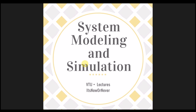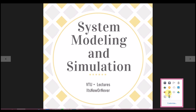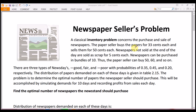Welcome to another class of system modeling and simulation. Today we're going to look at the newspaper seller problem, where we are trying to find the optimal number of newspapers the seller has to buy in order to make profit. This is a classic inventory problem concerning how much newspaper should I purchase or keep in stock so that I make a profit and not much goes to waste.